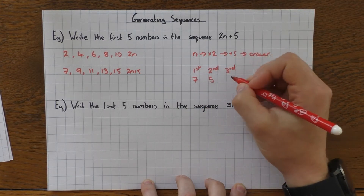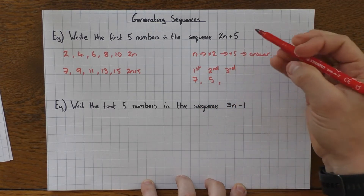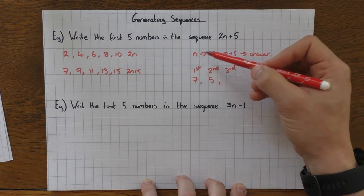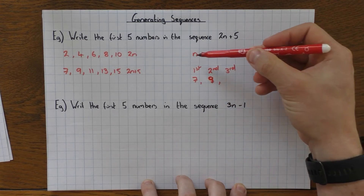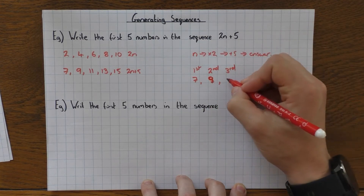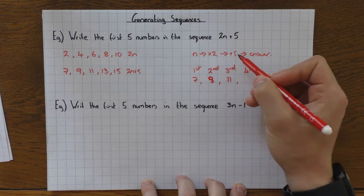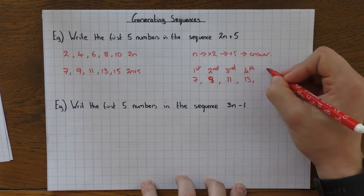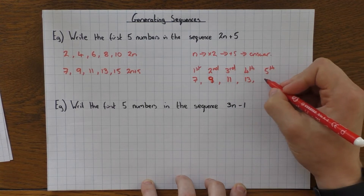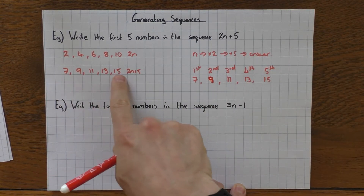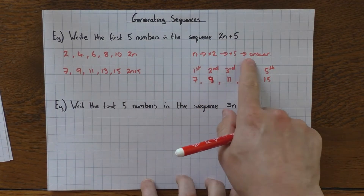And then the third number, 3 times 2 is 6, plus 5 is 11. Then if I want the fourth number, 4 times 2 is 8, then plus the 5 gives me the 13. And then if I want the fifth number, 5 times 2 is 10, then plus the 5, I get 15. So you can see I get exactly the same answer doing it either way.